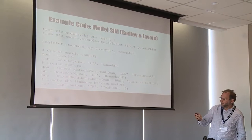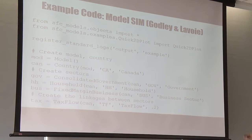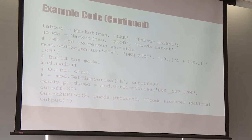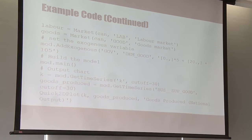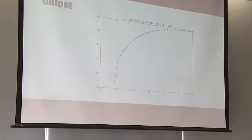Here's an example of the model code. You say 'mod = Model()', then 'can = Country()', for Canada. You create sectors: gov equals the government sector, and so on. You add an exogenous variable — this is model SIM from Godley-Lavoie, where government spending is exogenous. You say 'build the model', get the time series, and voilà — that's your output. The entire model was specified and generated with just a few lines of high-level code.